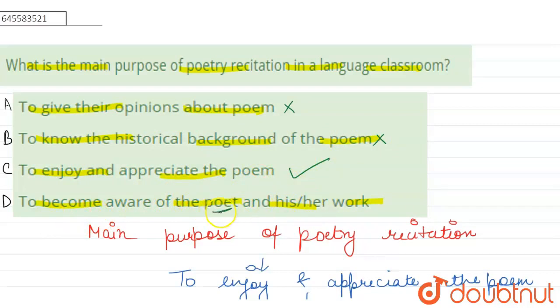And D: to become aware of the poet. हमें poem recitation का main purpose करना है, तो aware of the poet के बारे में aware होने से कोई benefit नहीं होगा। So C option is the correct answer. Thank you.